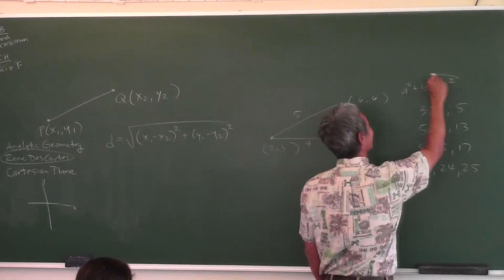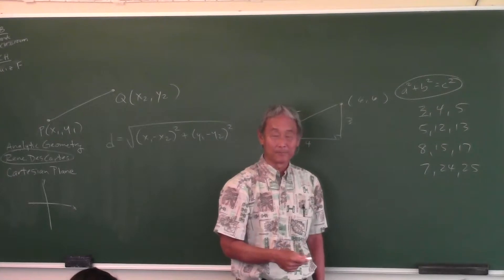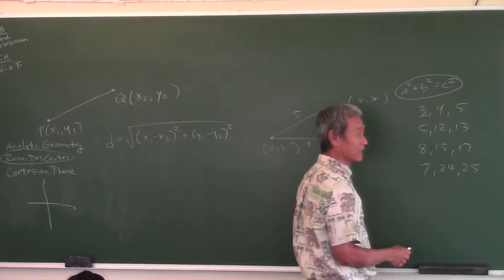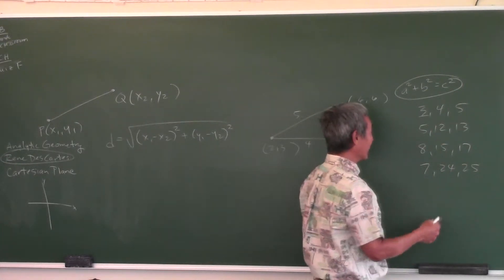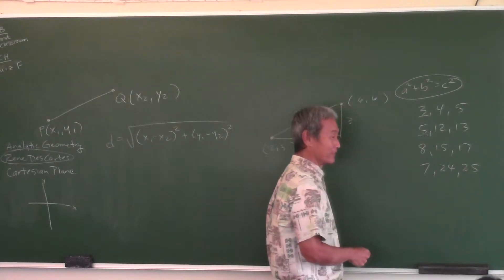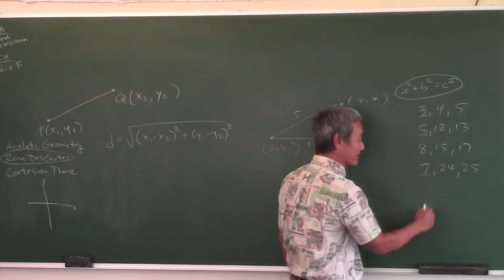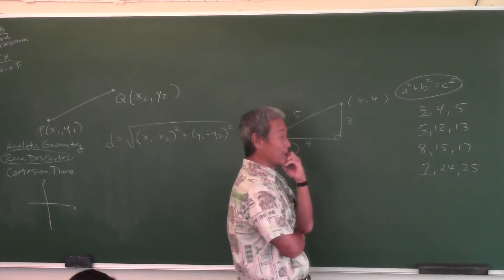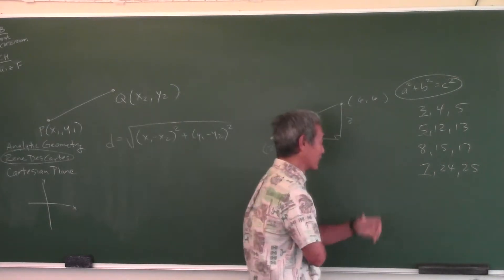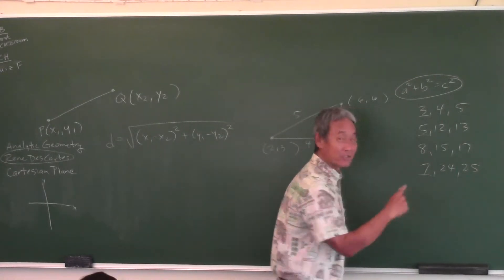Did you ever notice that when the first number is odd, there's a pattern? What is 3 squared? Nine. What do 4 and 5 have to do with 9? They add up to 9. What is 5 squared? 25. What do 12 and 13 have to do with 25? They add up to 25. When the first number is odd, you square it, and then find consecutive integers that add up to that square.